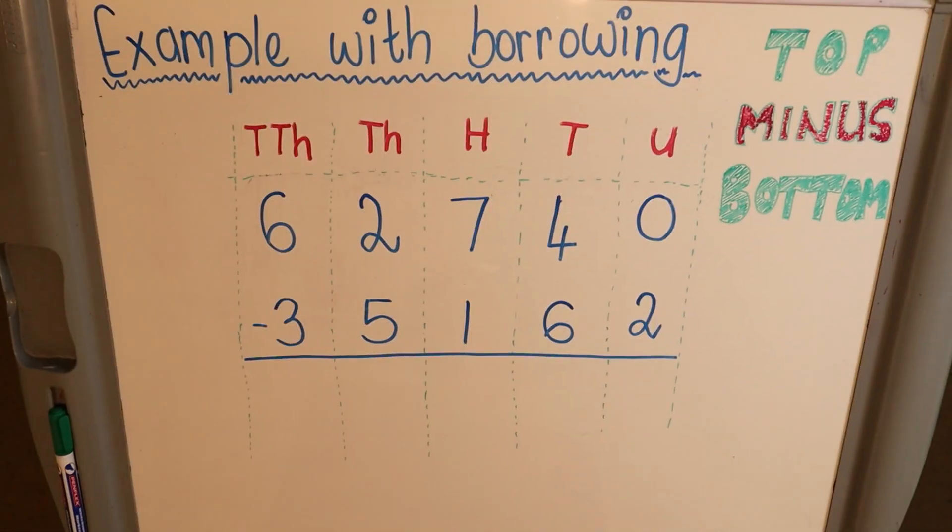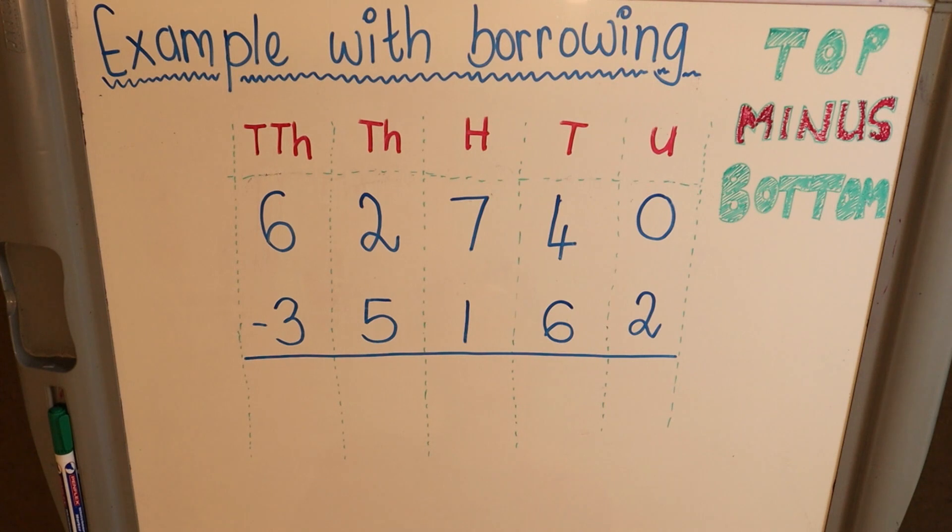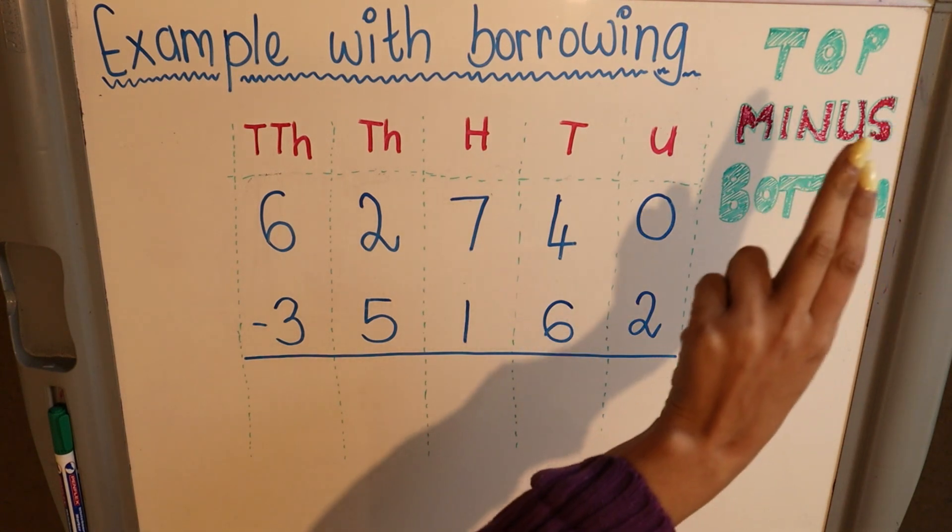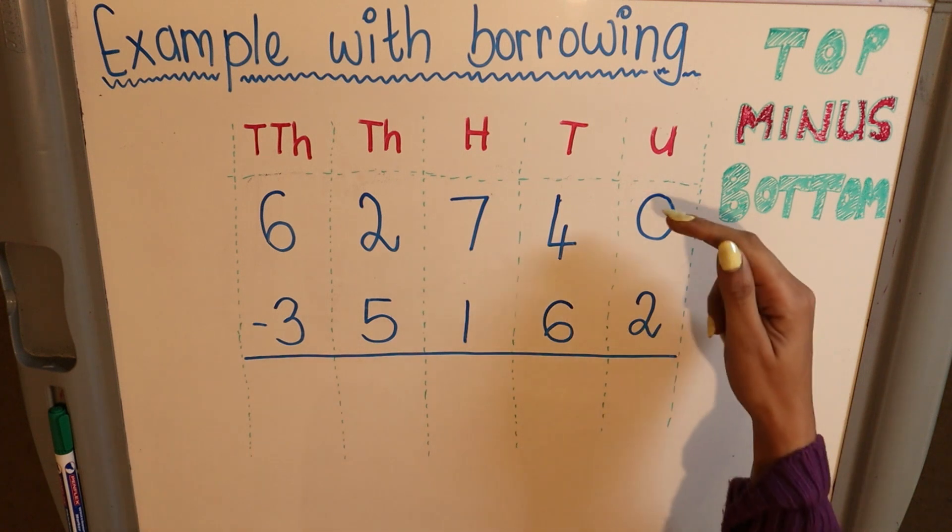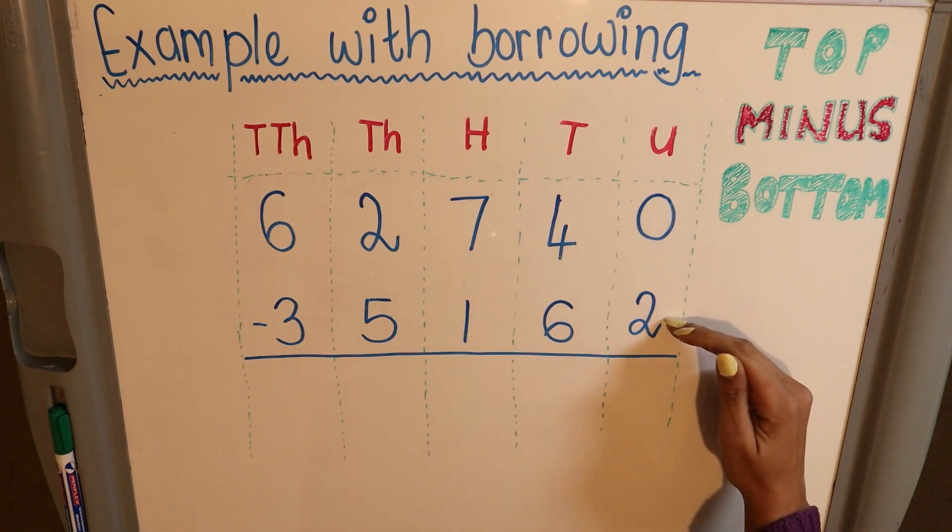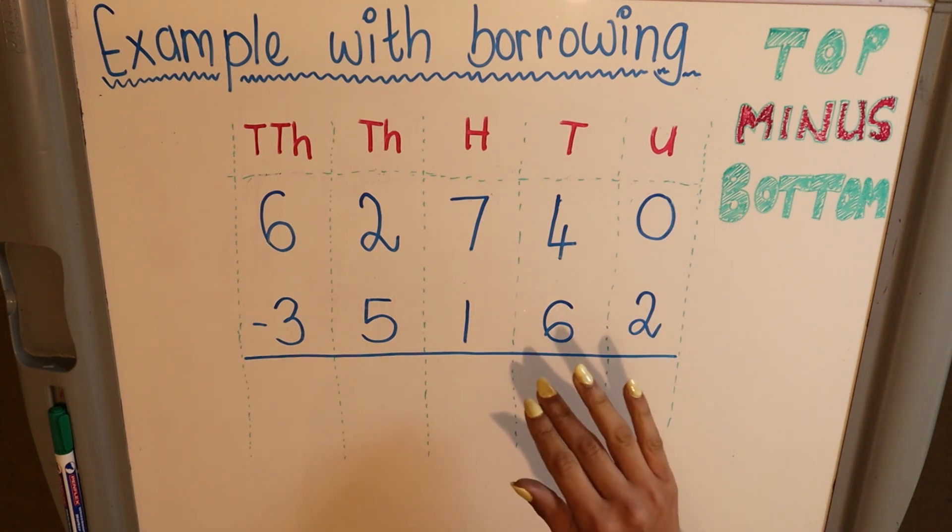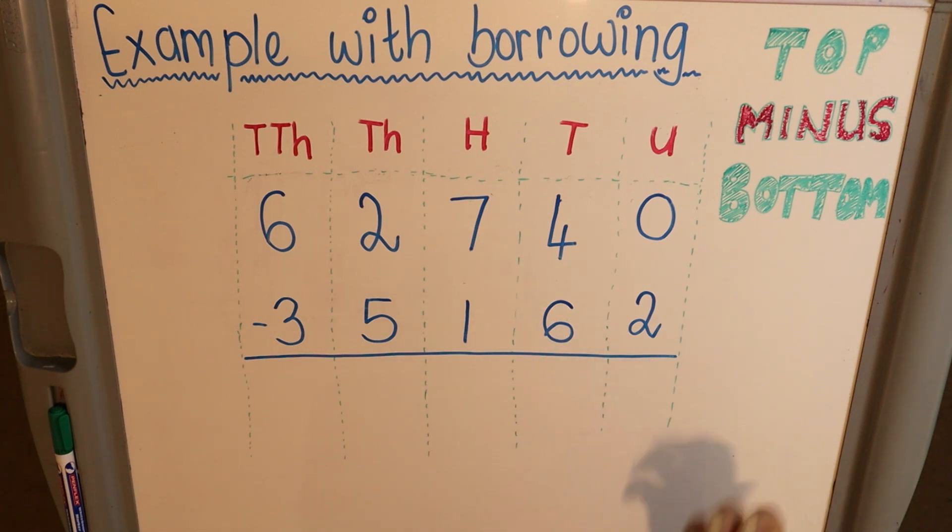In this example we're going to be doing borrowing. Again, the number one rule for subtraction is always going to be top minus bottom. Starting from your right in your units, you're going to start from the top. So 0 minus 2—if you have nothing, you can't take away 2. You have no sweets, you can't take away 2 sweets.